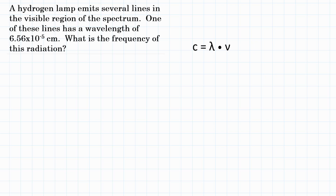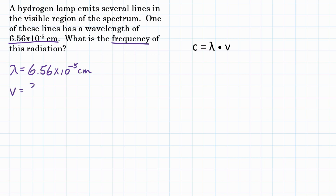The problem gives us 6.56 times 10 to the negative 5 centimeters — that is our wavelength. The question asks for the frequency, so that's what we're going to solve for. We're going to use the equation where the speed of light C equals wavelength times frequency. We need C, the speed of light, which is a constant: 3.00 times 10 to the 8th meters per second.